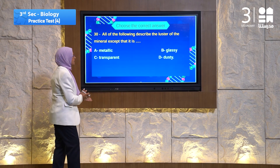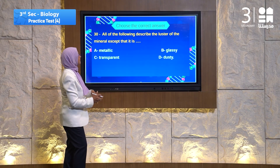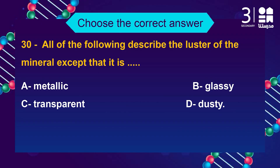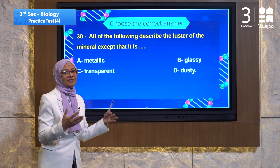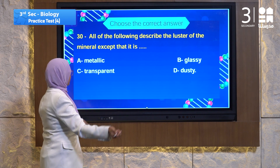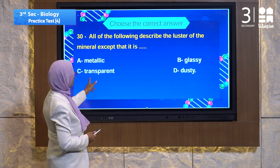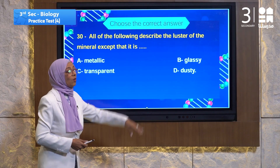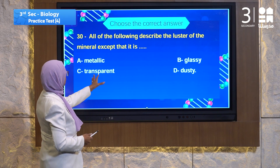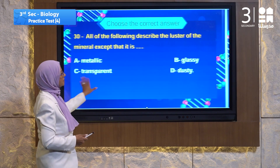Question 30 is a short question. All of the following describe the luster of a mineral except: metallic, glassy, transparent, and dusty. All of them are types of luster except transparent — transparent is not a luster property. That's the answer.